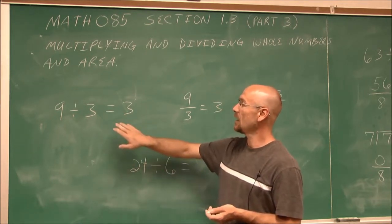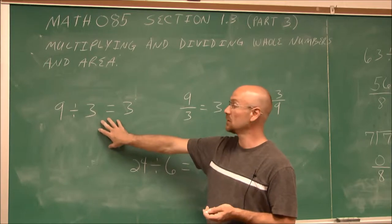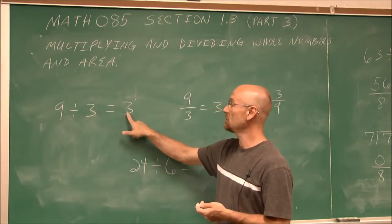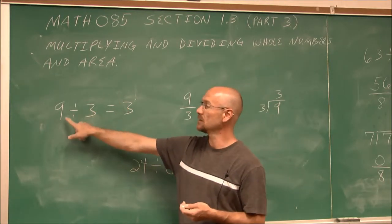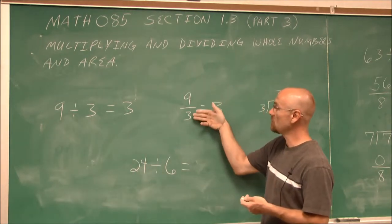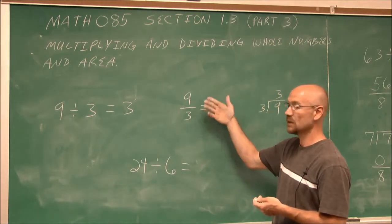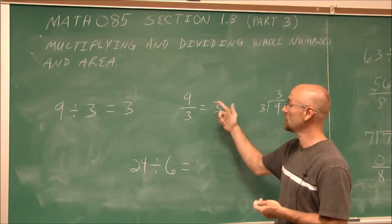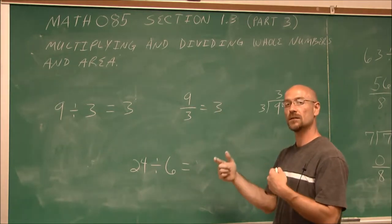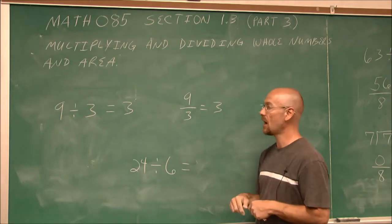And how can we check division? We can use multiplication. 3 times 3 is 9, so that's a true statement. 9 divided by 3 is 3. 9 minus 3, three times, would leave 3. 3 times 3 is 9. So we can see how multiplication and division are related operations.